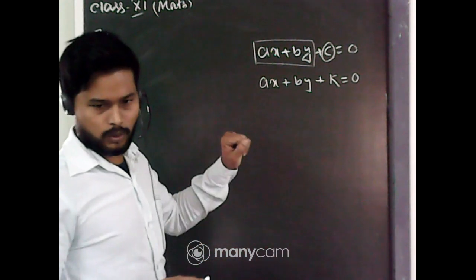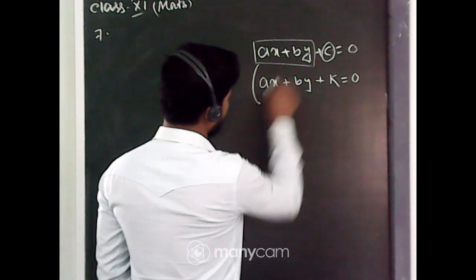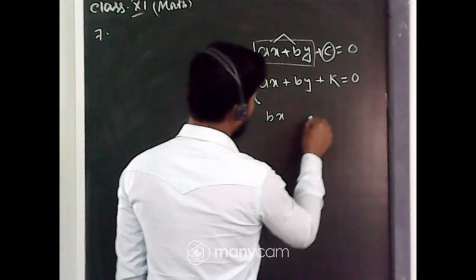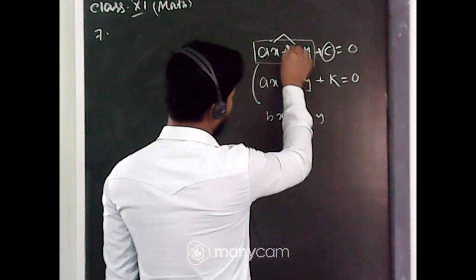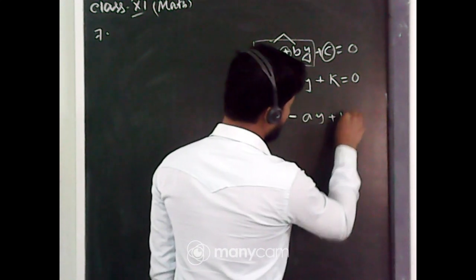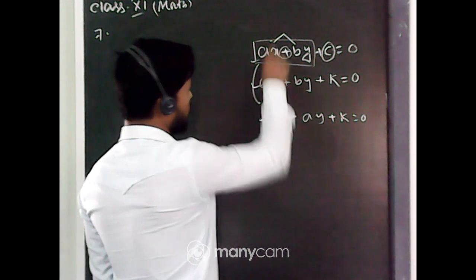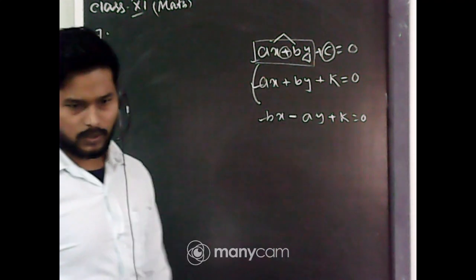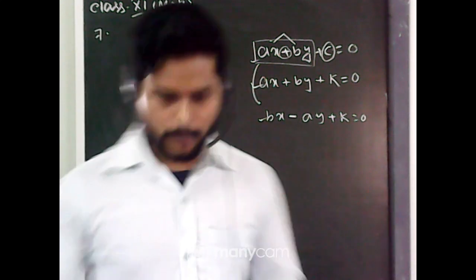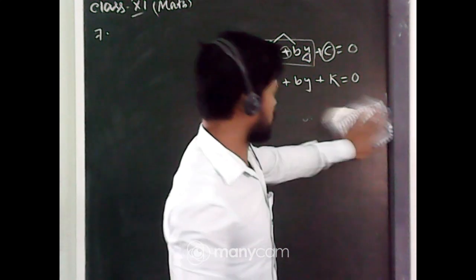And the equation of a line perpendicular to ax + by + c = 0 is formed by swapping and changing the signs of the coefficients: bx - ay + k = 0. We will use these two formulas depending on the question.